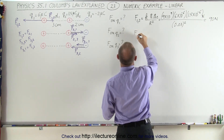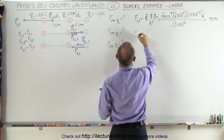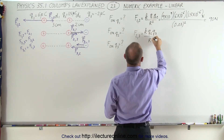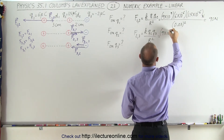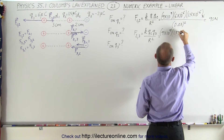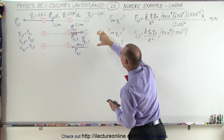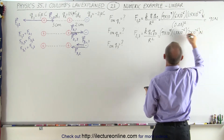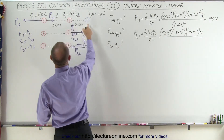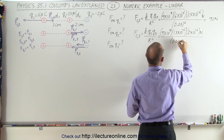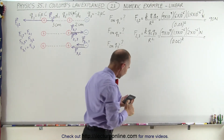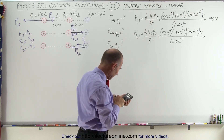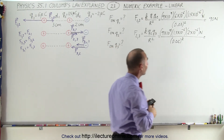Now how about the force between 2 and 3? That would be K times Q2 times Q3 divided by the distance between them squared. So it would be 9 times 10 to the 9th, times 1.5 times 10 to the minus 6, times 2 times 10 to the minus 6 — we ignore the negative sign — all divided by 0.02 meters squared. And that equals 67.5 newtons.